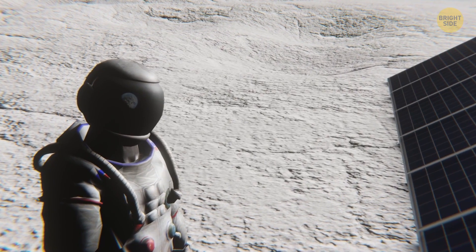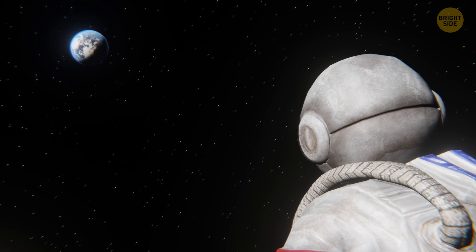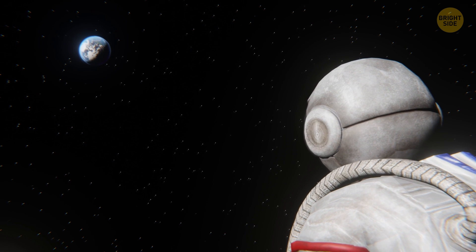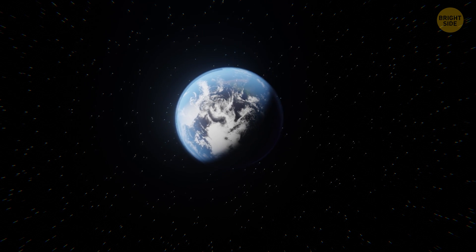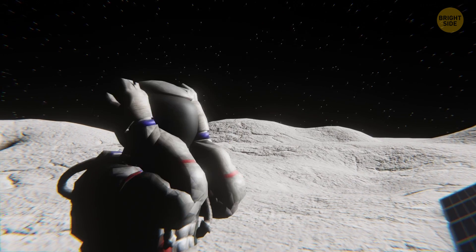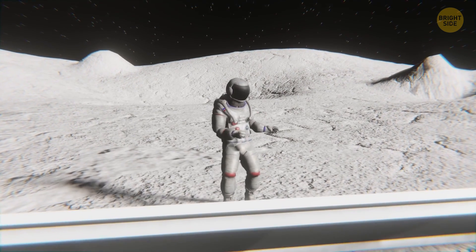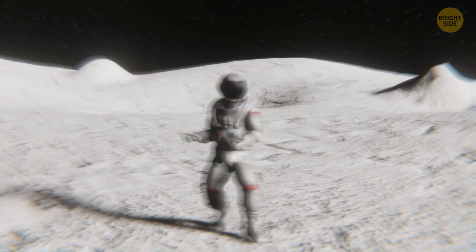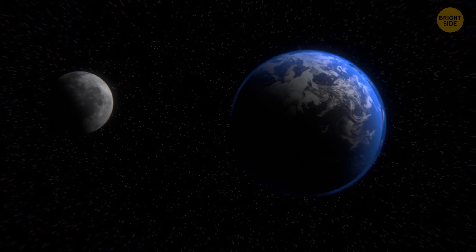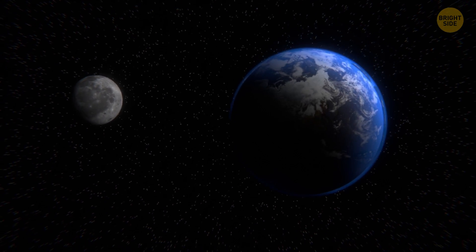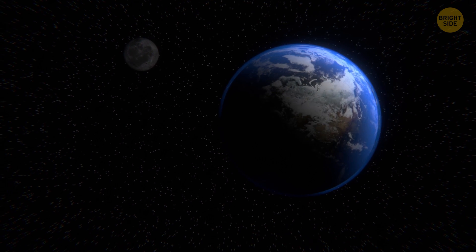You look up at Earth. You're so used to it, you barely even notice it anymore. But now, it looks different. It takes you a few moments to work out why. It appears to be shrinking. You begin to panic. The Earth is moving away. The ground rumbles again and you work out what's happening. The Earth isn't moving, but what you're standing on is. The moon has broken off its orbit and it's heading out into deep space. Destination unknown.